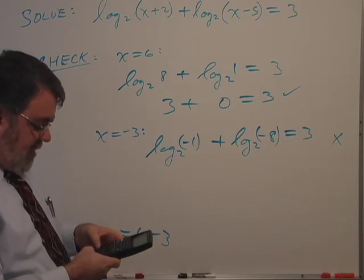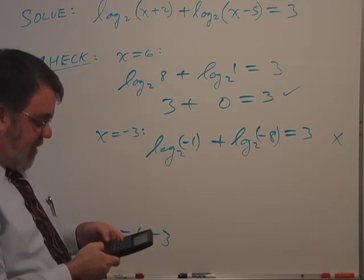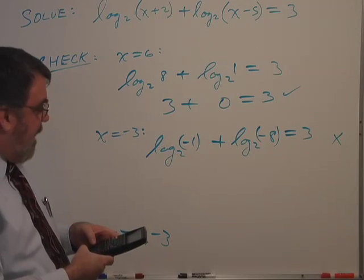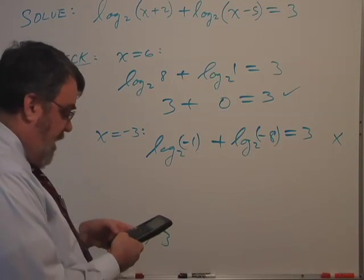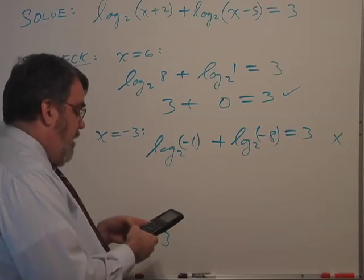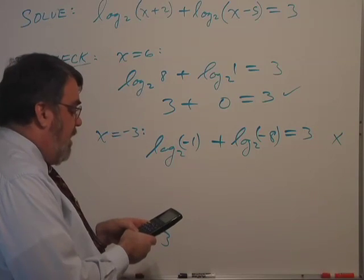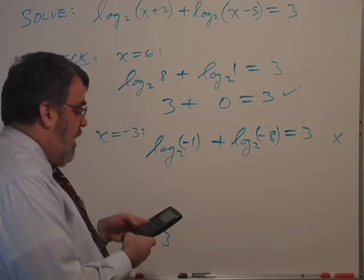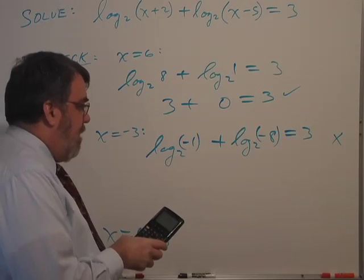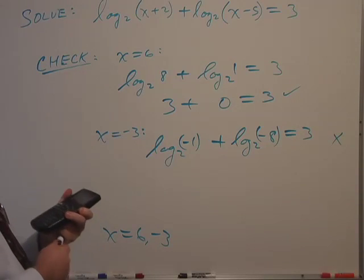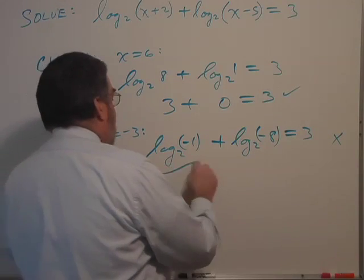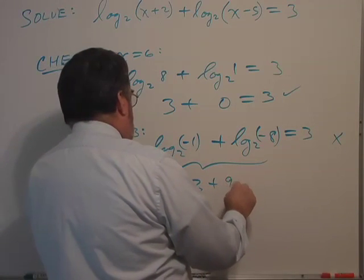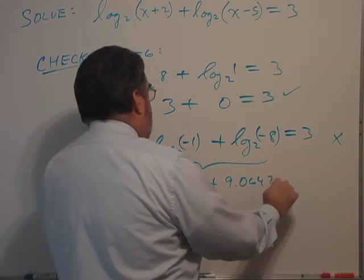So this would be log(-1) divided by log(2) using common log or natural log. I'm going to use natural log. So natural log(-1) divided by natural log of 2 gives me a complex number, a strictly imaginary number, plus natural log(-8) divided by natural log of 2. And the sum of these equals, this is the left side, 3 plus 9.0647i.